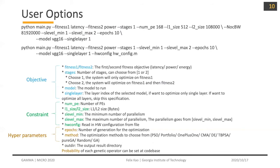Here are some options you can set up in the argument input, categorized into objective, constraint, and hyperparameter. For objective, Gamma is about two-stage optimization: it optimizes the first fitness at the first stage and second fitness at the second stage. If you only care about latency, you can just set the stage as one and set fitness one as latency. Here, model is the target model you want to optimize, like VGG16. Single layer means if you just want to see the performance of optimizing one layer of the model, you can put the layer index here. Constraint will include number of PE, L1, and L2 sizes. SL min and SL max mean the number of parallelism levels.